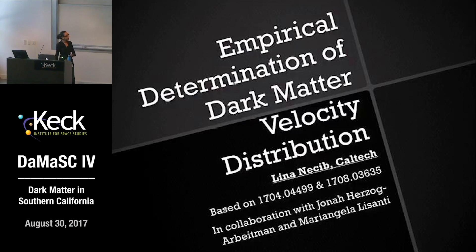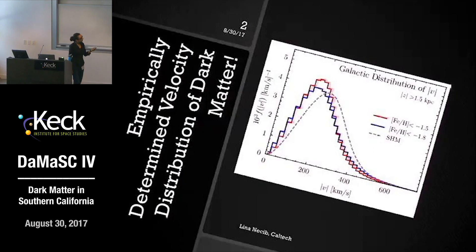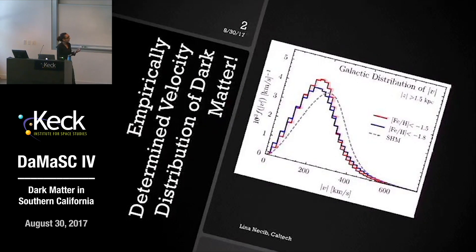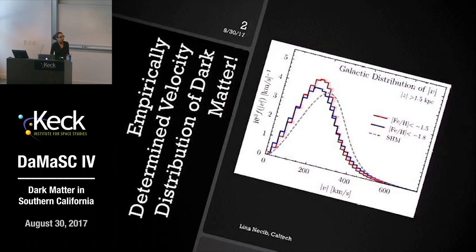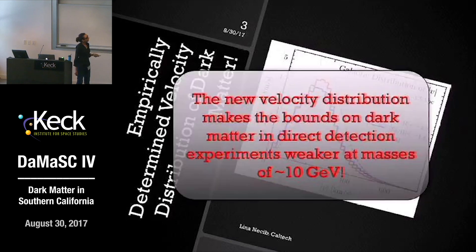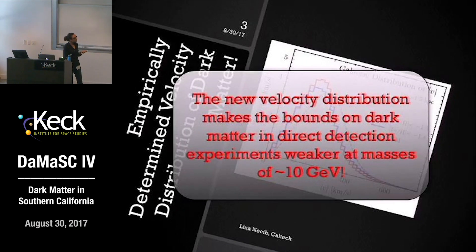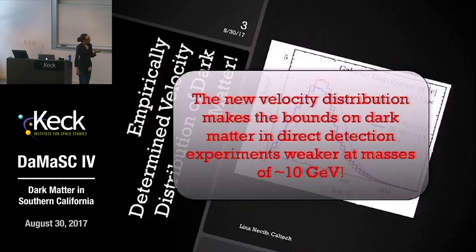I'm going to start with a punchline and then walk my way backwards. The bottom line is that there is a new velocity distribution of dark matter that I would rather you use when you estimate direct detection limits. This new velocity distribution makes the bounds on dark matter in direct detection experiments weaker for low-mass dark matter — for masses 10 GeV and lower — and weaker by almost a factor of 2, which is quite a significant change.